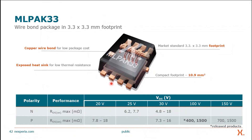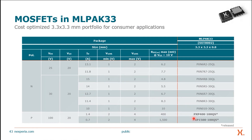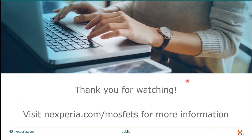Our brand new MLPAC33 package is dedicated for consumer and mobile applications. Inside the package, copper wires are used to contact the silicon to the lead frame, and there is a large exposed heat sink for low thermal resistance. It fits the standard 3.3×3.3 mm market footprint. Currently two P-channel products are available, with N-channel products in release and becoming available in the coming months. For more information, visit infineon.com/MOSFET. Thank you and goodbye.